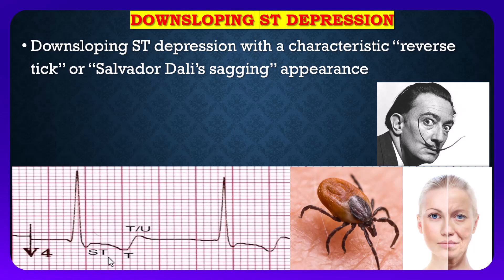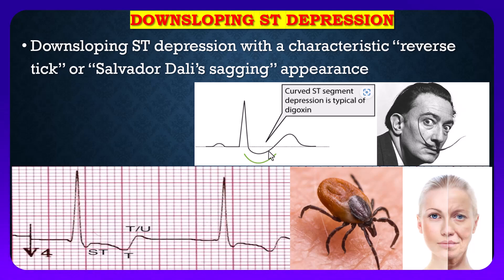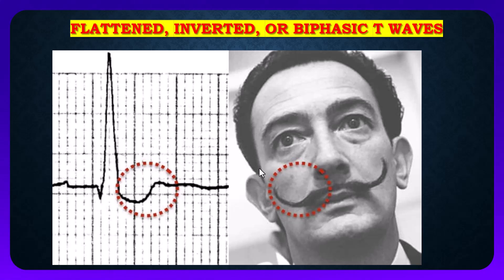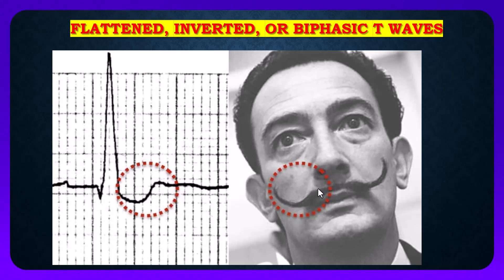This is a typical ST segment depression with digoxin medication. The second sign of digoxin medication is a flattened, inverted, or biphasic T wave. You can see the T wave — it may be either flattened, inverted, or biphasic. You can see that after the ST depression there is a flattened T wave, and there can also be a downward curve in most stages.